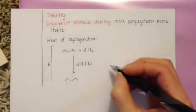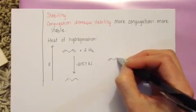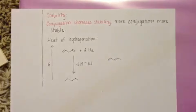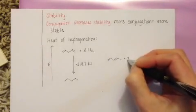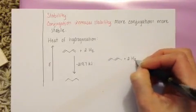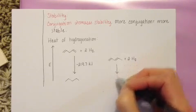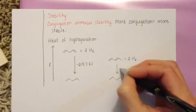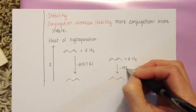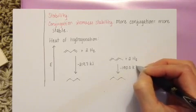If we have a similar conjugated diene, two double bonds, five carbons also requires two moles of hydrogen, it releases, it hydrogenates down again to pentane, and when it hydrogenates down, it releases only 192 kilojoules per mole of diene.